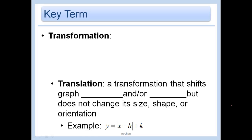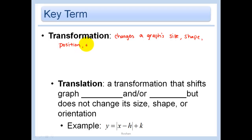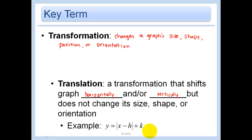A transformation is something that changes a graph's size, shape, position, or orientation. Basically, that's going to mean we either make the graph look fat or skinnier, shift it up or down, flip it over, and those types of things. A translation is a transformation that shifts the graph horizontally and/or vertically, but does not change its size, shape, or orientation. A translation is just a shift. An example would be y equals the absolute value of x minus h plus k.